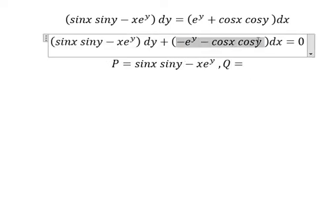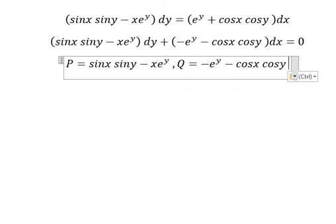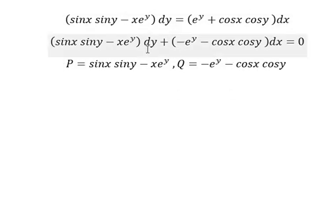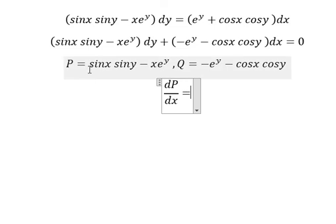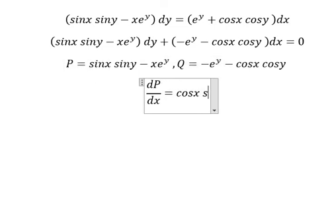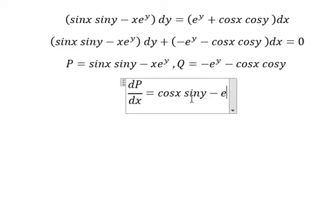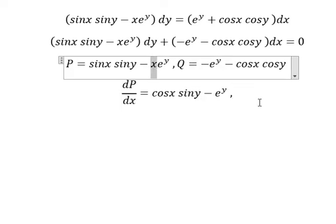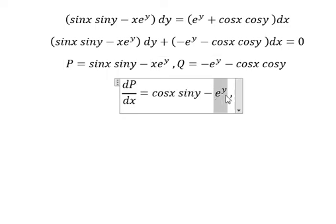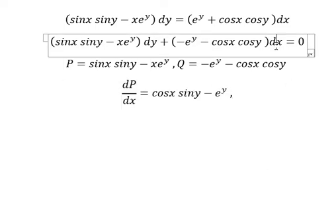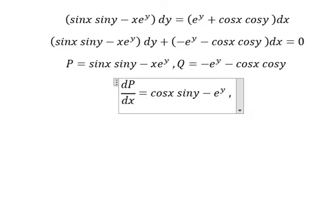First, the partial derivative with respect to x: dP/dx equals cosx siny minus e^y. For this term, we have the number one, that's why we have e to the power of y. For this one we have dx, which means we need to find the partial derivative of Q with respect to y.